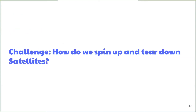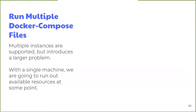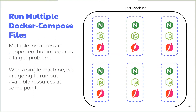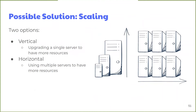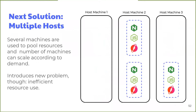The first challenge was spinning up and tearing down individual instances. The naive solution is to just run multiple Compose files on a single machine, but this introduces problems of port, name, and network conflicts. The larger problem is that at some point the single machine will run out of available resources as more Satellites are spun up. To solve this resource scarcity problem, we could scale vertically by upgrading a single server, or scale horizontally to include more servers which pool resources together. The problem with vertical scaling is that there is a limit to how many resources one server can have, and the cost rises exponentially.